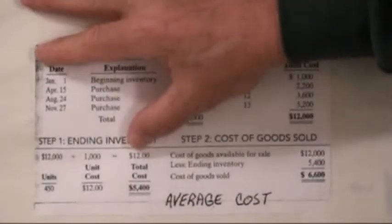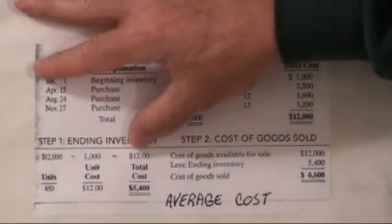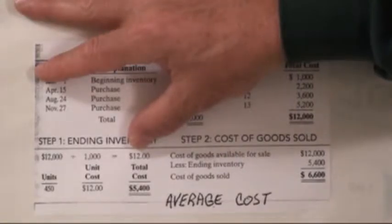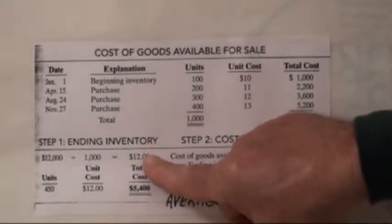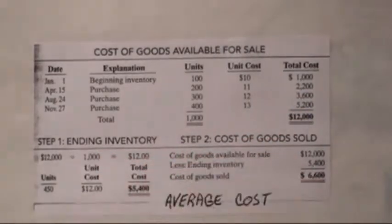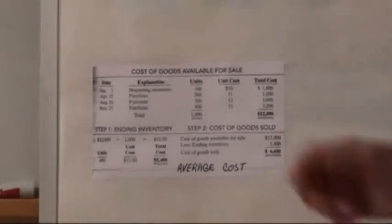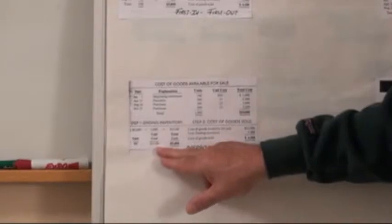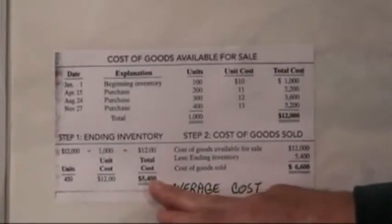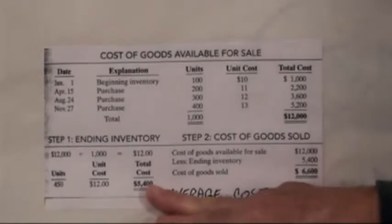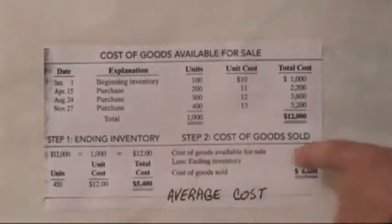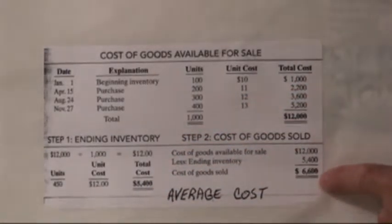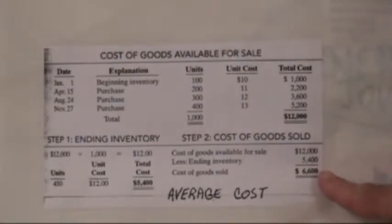In some problems the per-unit cost may come out to something like $12.32 — if it goes beyond three decimal places, round back to two. So at $12 per unit with 450 ending units, we multiply 450 times $12 and get $5,400 as our ending inventory. Then total goods available for sale minus ending inventory gives us our cost of goods sold, which we carry into the income statement.